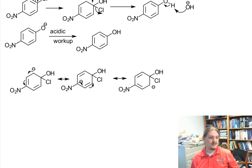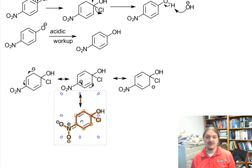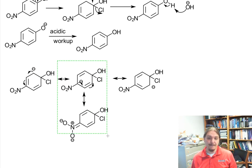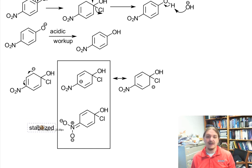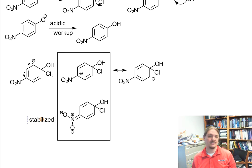Now it's the middle resonance contributor that has something special, because you can have an additional resonance contribution from the nitro group itself. Since the nitro group is electron withdrawing, the carbanion here is stabilized — stabilized by the electron withdrawing group in the para position. If the electron withdrawing group were in the ortho position, it would also stabilize it. But when that electron withdrawing group is meta, the negative charge never reaches the meta position, so it doesn't stabilize the intermediate.